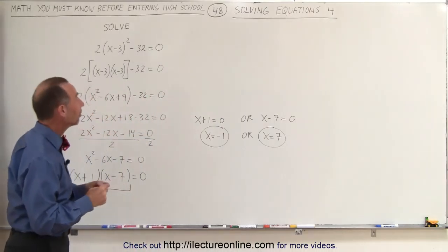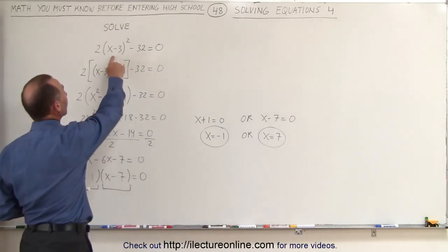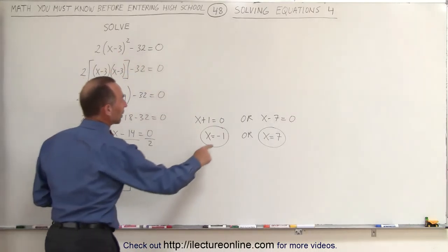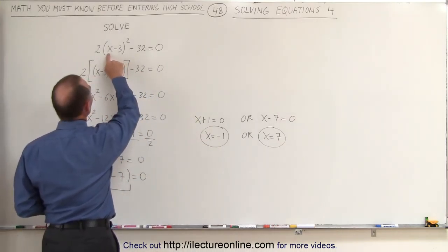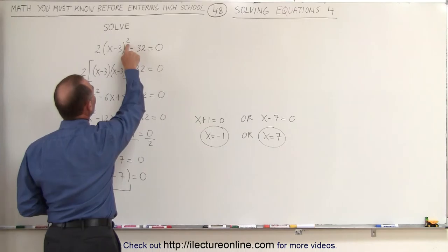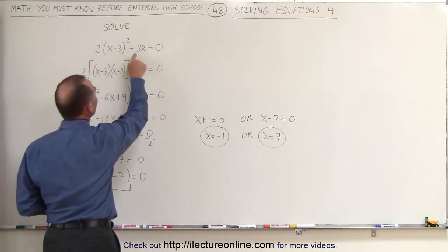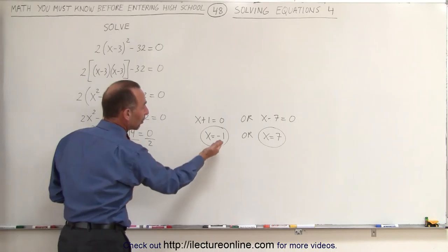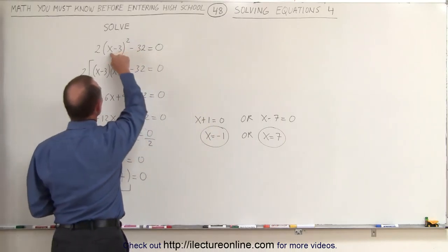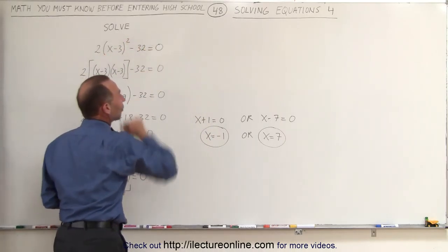Either one of those two solutions is a valid solution for the original problem. So if you plug in negative 1, negative 1 minus 3 is minus 4. Square that, you get 16 times 2, you get 32. 32 minus 32 equals 0. So when you plug in x equals negative 1 into the equation, the left side equals the right side.